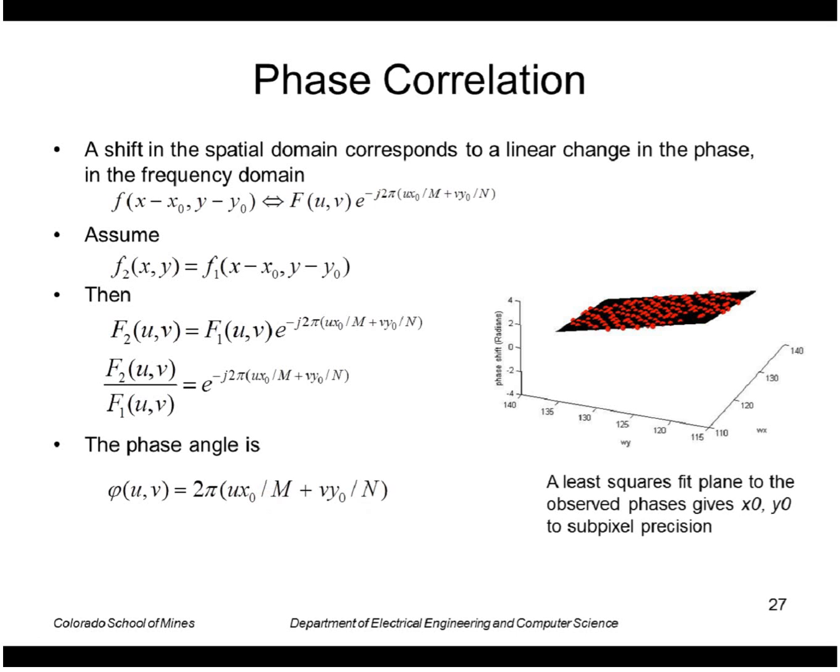This actually looks like a plane in u,v space. If we take u,v, take the phase shift in radians, and fit a plane to that, which we can do pretty accurately, we can find these values of x0 and y0.